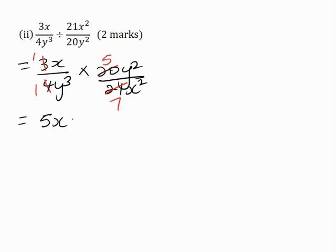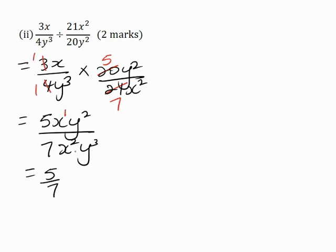This gives 5xy squared all over 7x squared y cubed. Now by the laws of indices, when the bases are the same and we are dividing, we subtract the powers. Any quantity to the power of 1 is itself, so x by itself is x to the power of 1. So we have 5 over 7, and 1 minus 2 is minus 1, giving x to the power of minus 1. We remove the negative sign by placing that term in the denominator, so this becomes 5 over 7xy.